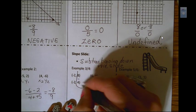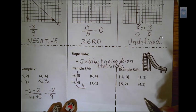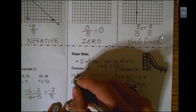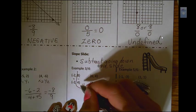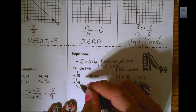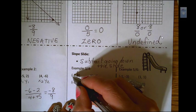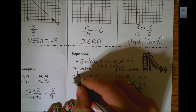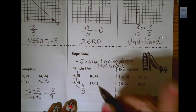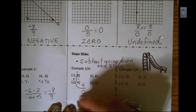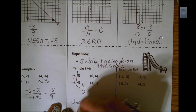It's 8 minus 4, which is 4. It's negative 2 minus a negative 2. So this method is probably more for people that can do this mentally. So this becomes plus plus. Negative 2 plus 2 would give you 0. Ah! Dividing by 0 would give us an undefined slope.